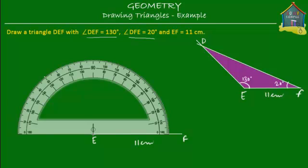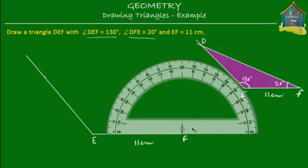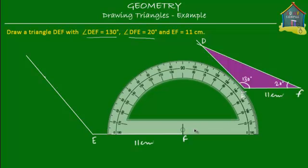So I start at E and pass through 130 degrees. So that's done. Now next, angle DFE is 20 degrees, so I move my protractor to point F and mark 20 degrees on it. Now this is 20 degrees. So start my line, go through 20 degrees, and here is my triangle.